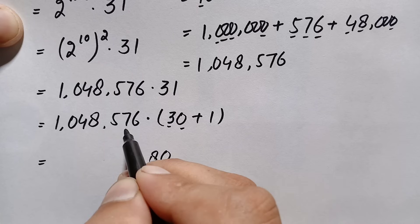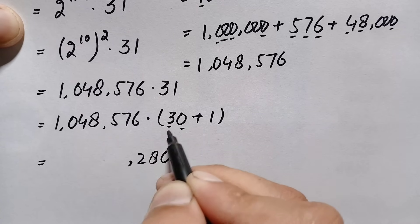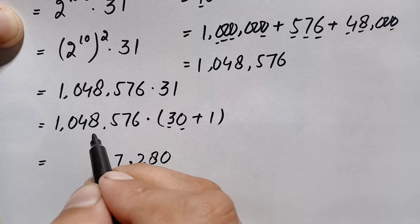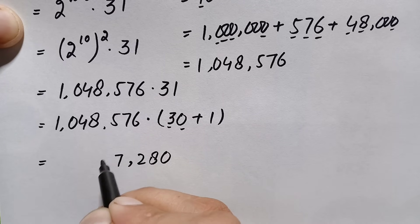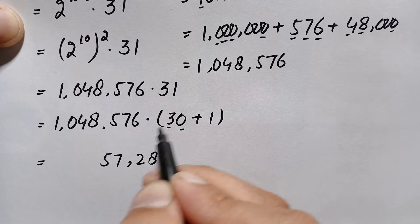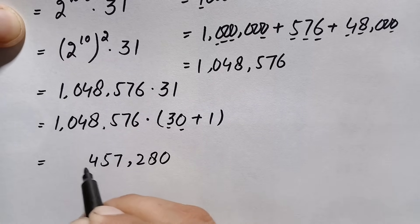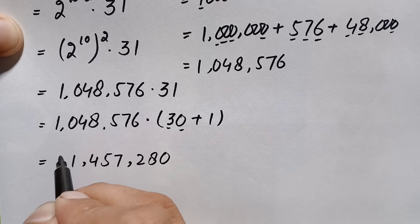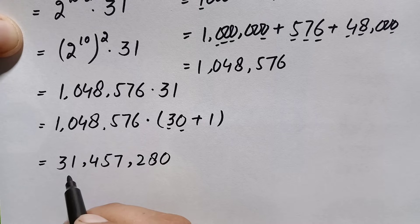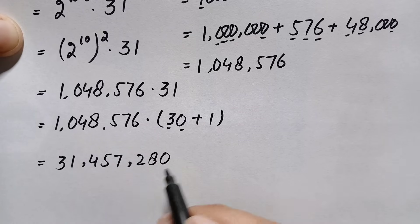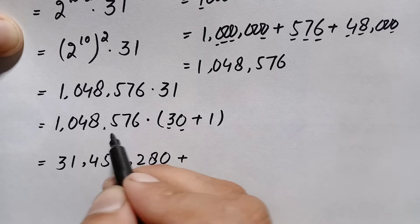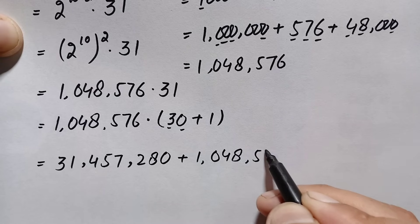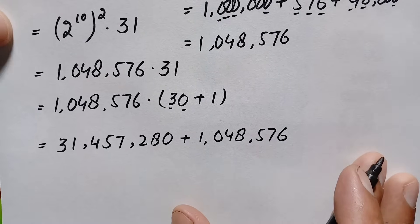Multiplying 1,048,576 by 30: first multiply by 3. 3 times 6 is 18, write 8 carry 1; 3 times 7 is 21 plus 1 is 22, write 2 carry 2; 3 times 5 is 15 plus 2 is 17, write 7 carry 1; 3 times 4 is 12 plus 2 is 14, write 4 carry 1; 3 times 0 is 0 plus 1 is 1; 3 times 1 is 3. Multiplying by 10 gives 31,457,280. Then 1,048,576 times 1 is simply 1,048,576.